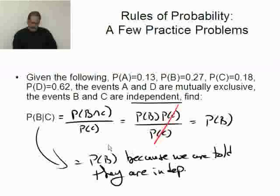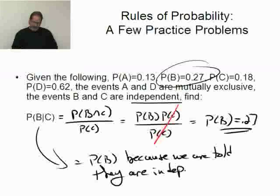this is simply equal to the probability of B because we are told they are independent. And the probability of B is what? 0.27. There we go. Piece of cake. Let's see what's next.